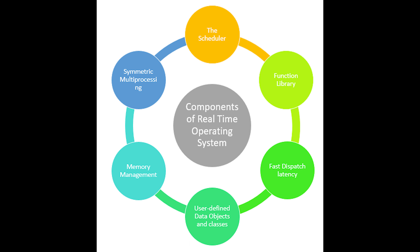Then we have the function library. This is an important element of the real-time operating system that acts as an interface, helping you connect kernel and application code. This allows you to send requests to the kernel using a function library so that the application can give the desired result.